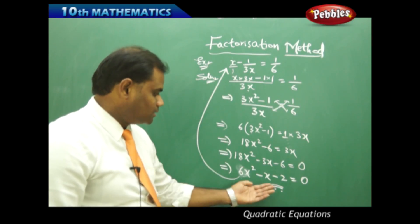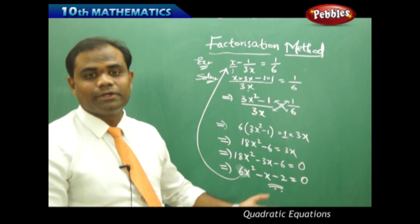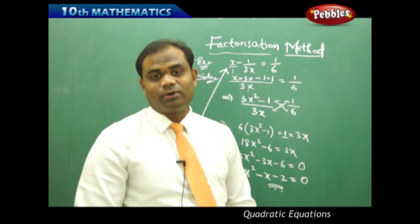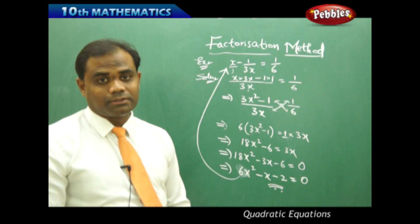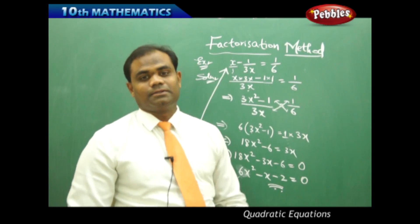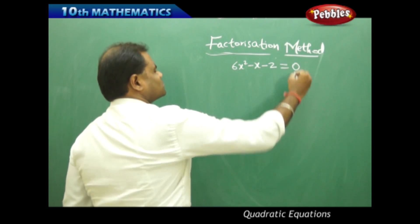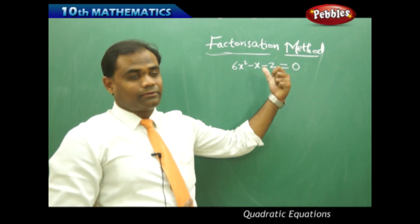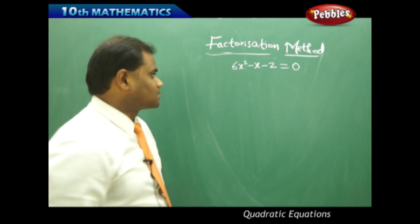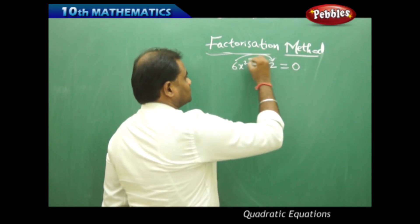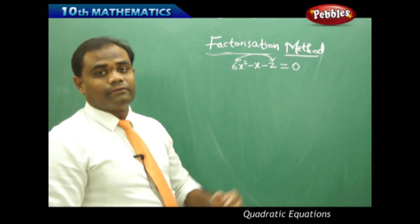This is clearly a quadratic equation obtained from the given problem. The roots of this quadratic equation are indirectly the solution of the original problem. Now, to solve 6x squared minus x minus 2 equals 0 using the factorization method, the first rule is that we always multiply the coefficient of x squared with the constant term — always.